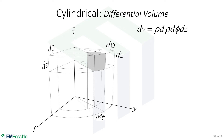Last, we do our differential volume. We live in a three-dimensional world, so this is purely a scalar quantity. It's the product of the lengths of the three edges: d-rho, dz, and rho d-phi. Multiplying all those together gives the overall volume: rho d-rho d-phi dz.